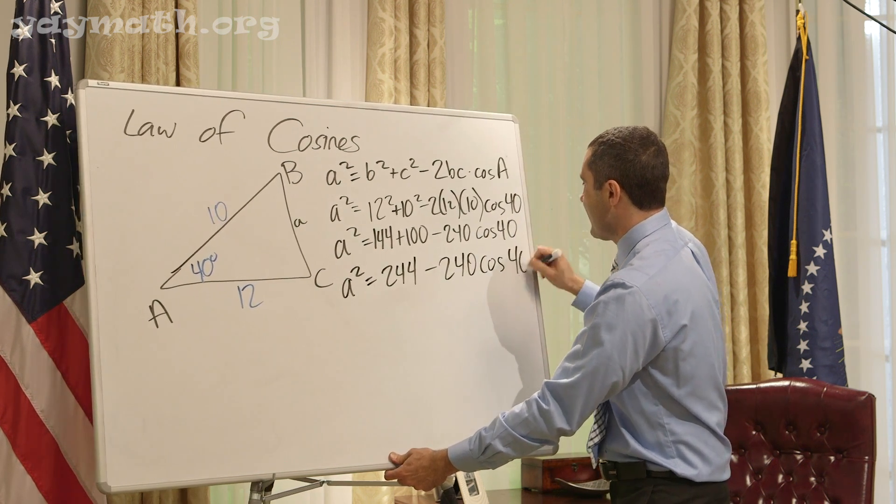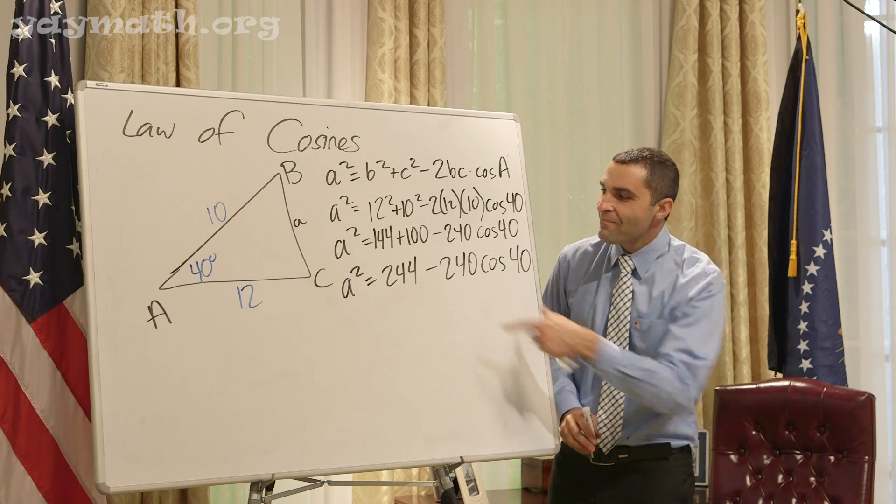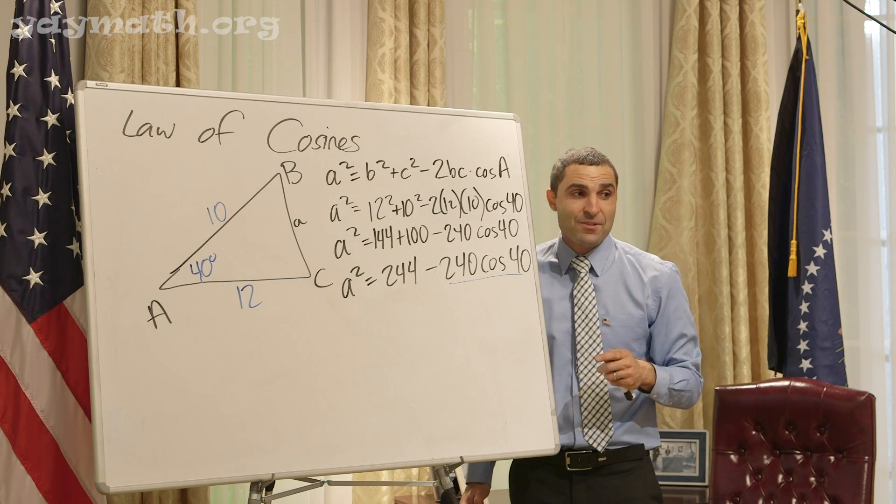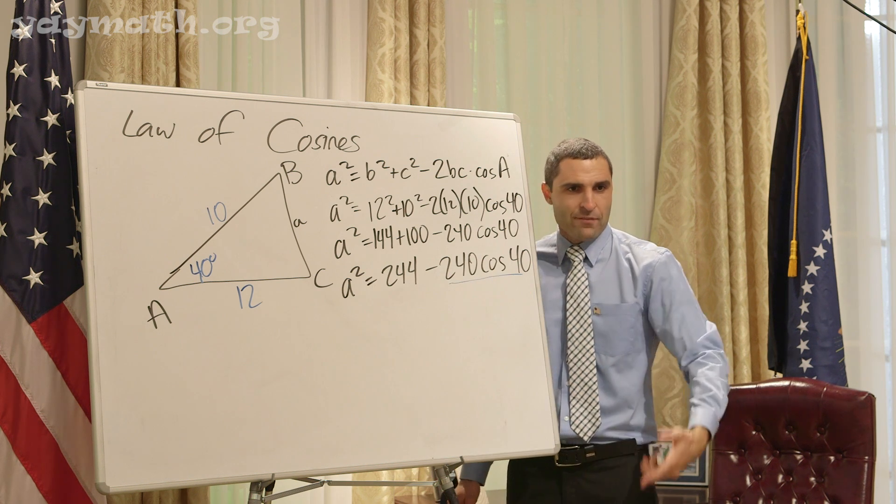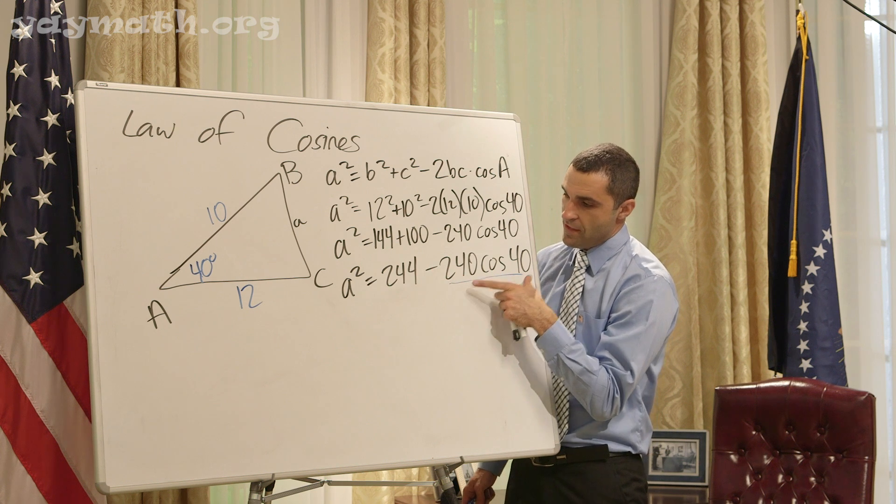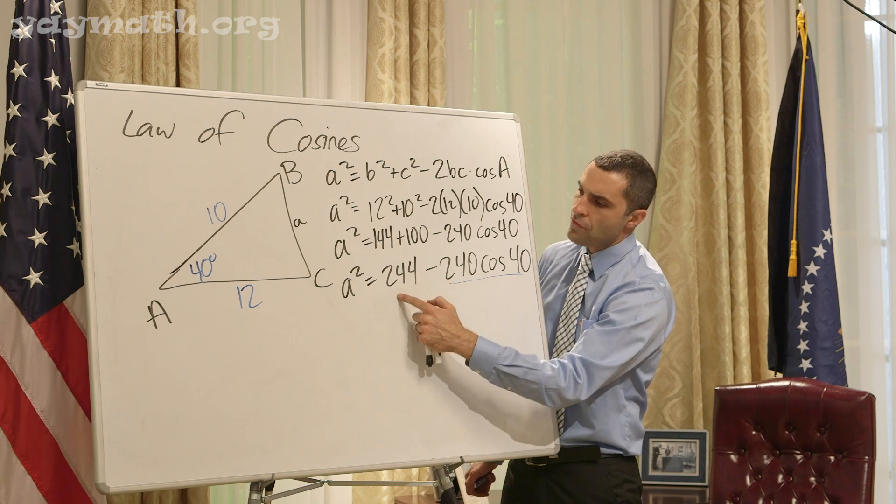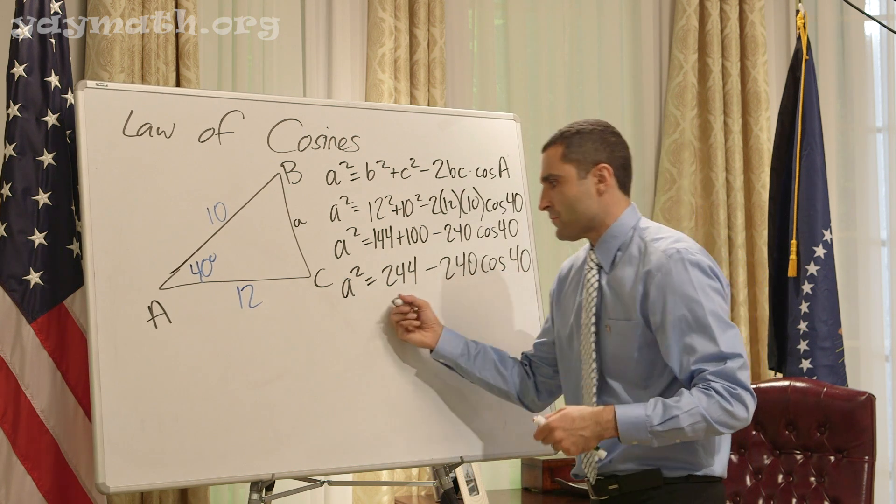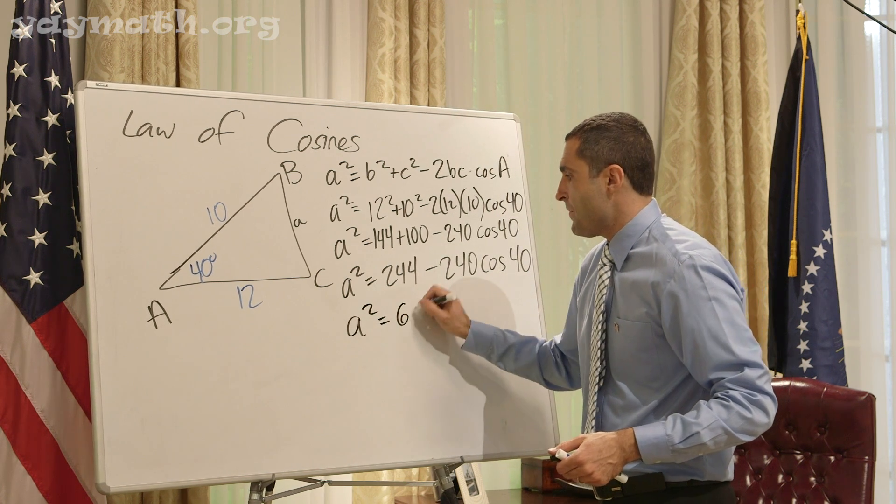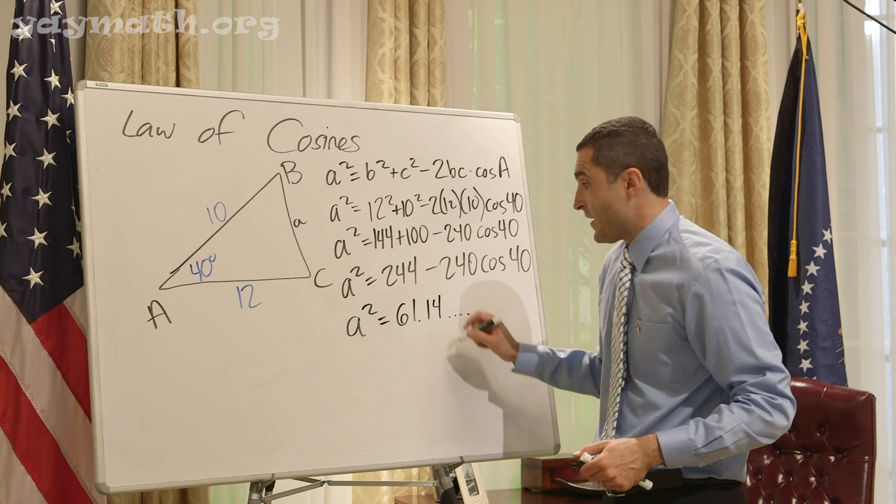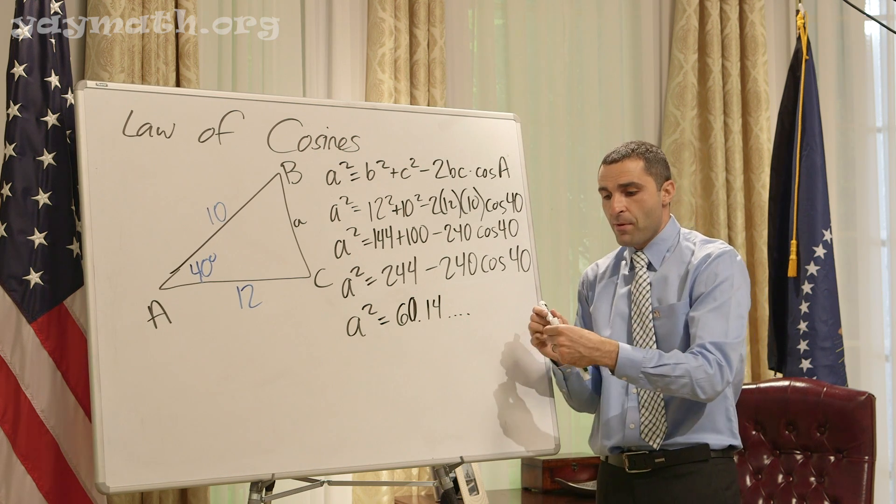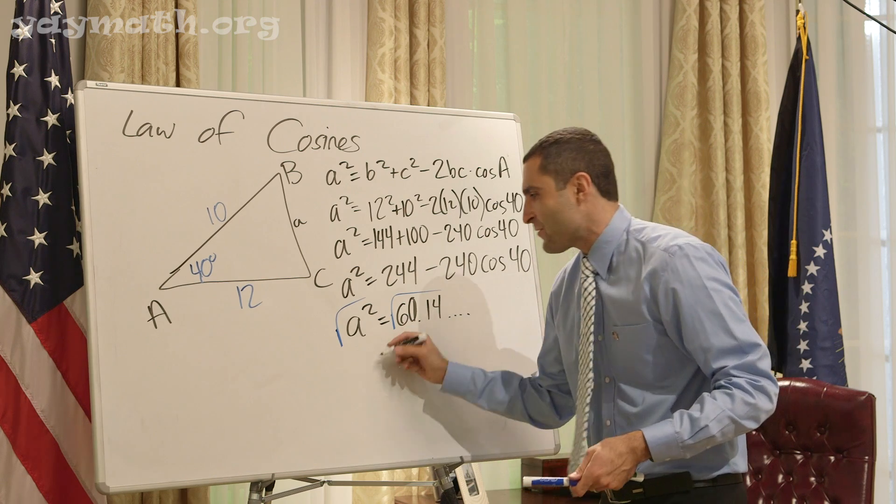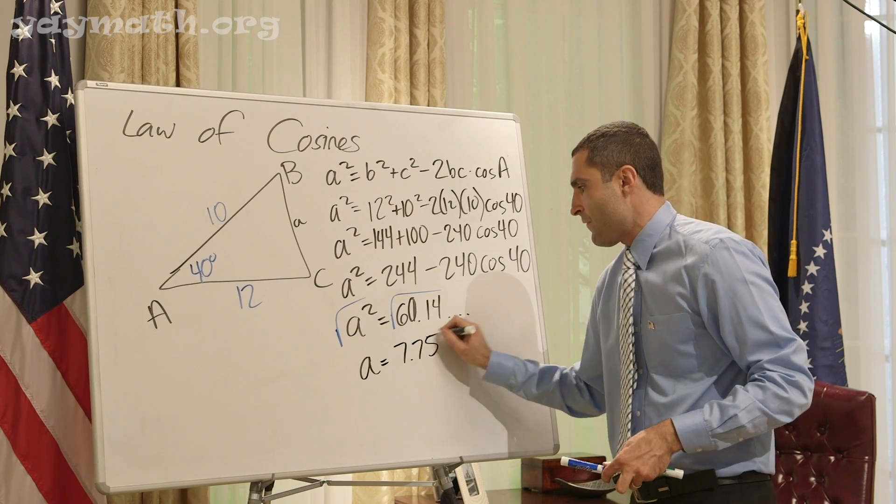What's the common mistake students do here? Students are tempted to do 244 minus 240. Don't be that student. This is one piece—you could just put this in the calculator all together. Do 244 minus 240 cosine of 40. What do we get? 60.14. And now how do we get a? Square root. You get a equals 7.75.